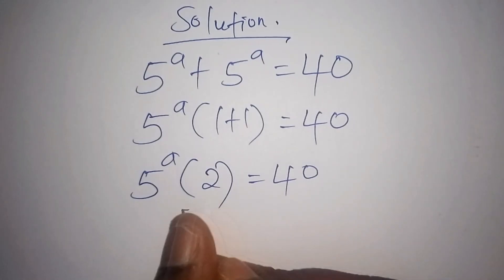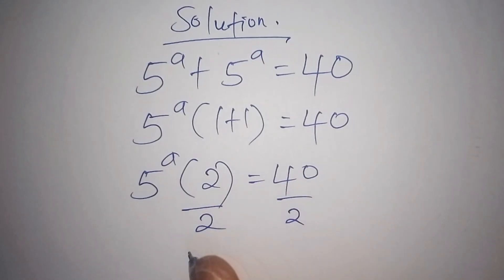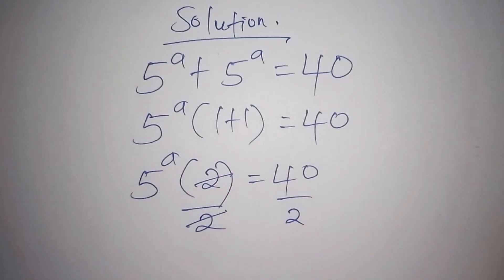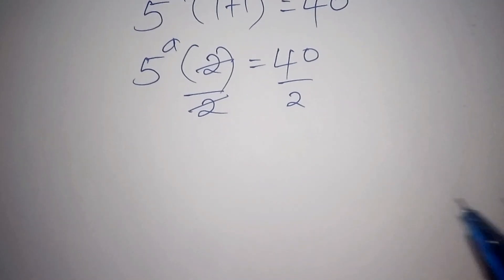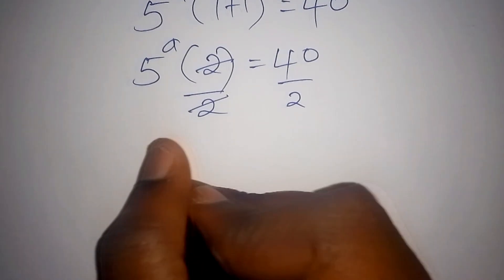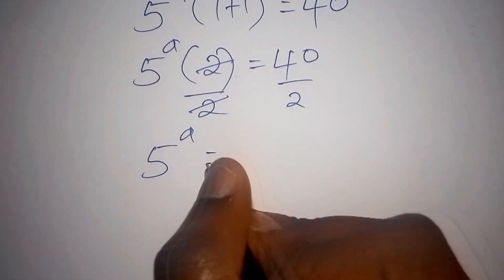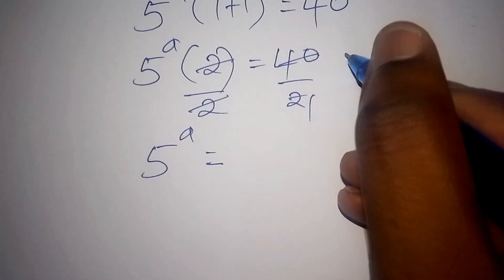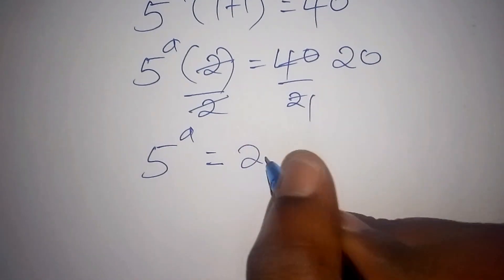Next is to divide both sides by 2, so that 2 by 2shall cancel. Now we shall have 5 to the power of A is equals to 20, since 40 divided by 2 gives us 20.